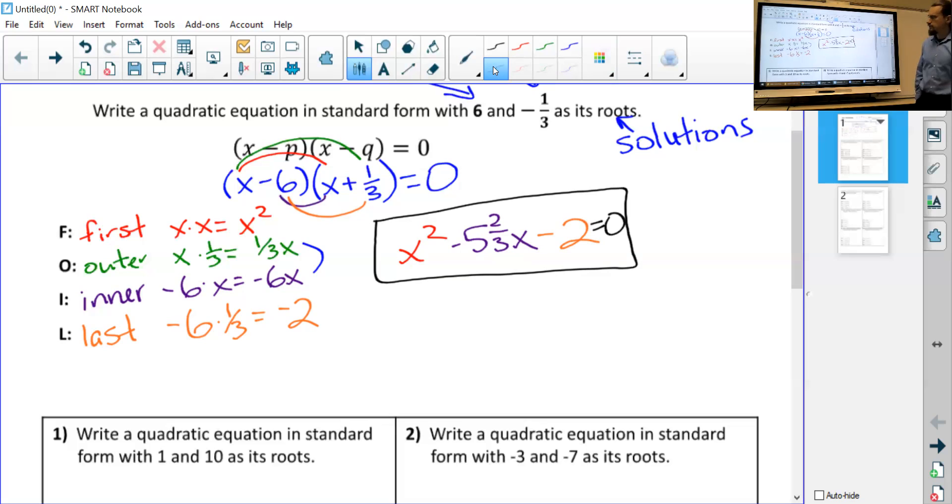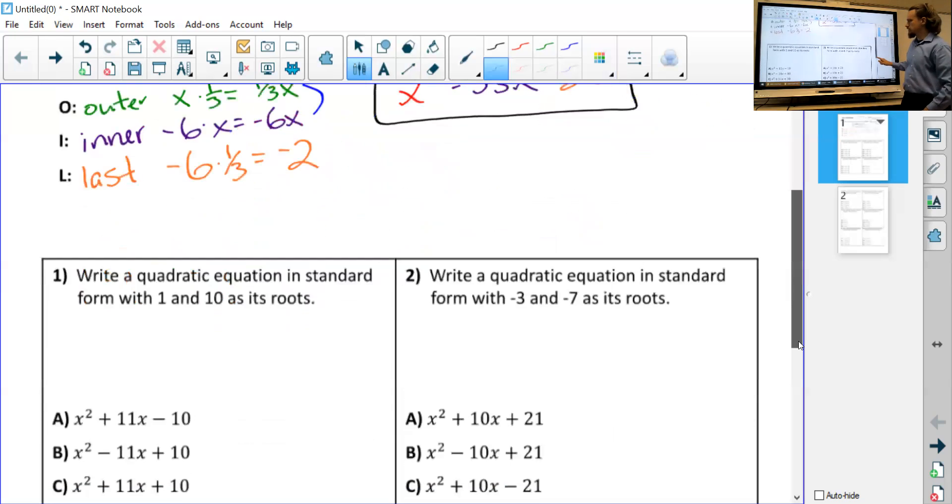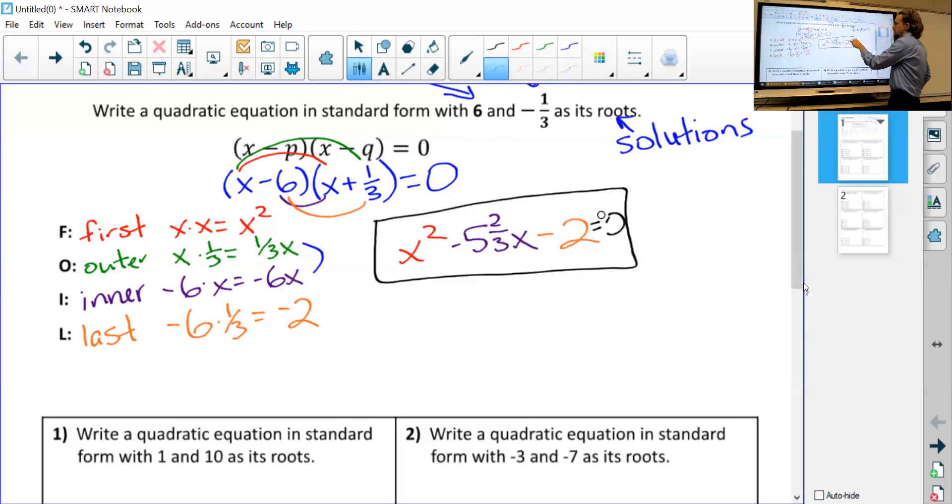And all of that equals zero. So if we were to solve that, we graphed it out, we would have solutions that would cross the X axis at six and negative one third. But really what we want today, we don't even want the whole equation. We just want the polynomial. We just want to know if I put my roots as polynomials and I distribute them all out using FOIL, what will I end up with?